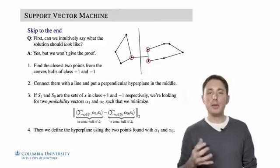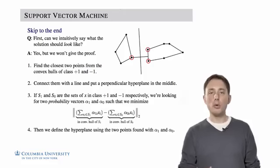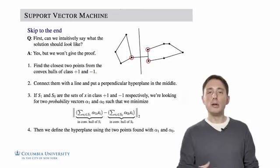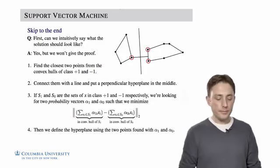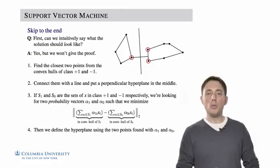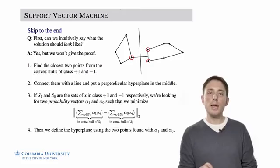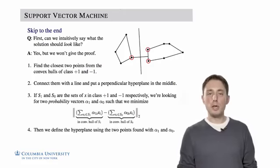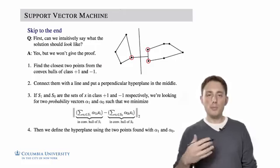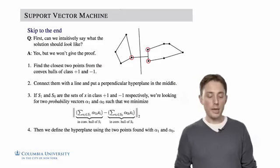So why don't we first skip to the end, develop some intuition, and then come back and look in more detail what the objective function that we discussed on the previous slide is doing. So can we intuitively say what the max margin hyperplane should look like? And so right now this is mostly intuition. We're not going to give a rigorous proof that the max margin hyperplane should satisfy this requirement, but to facilitate the intuitions, what should the max margin hyperplane look like?